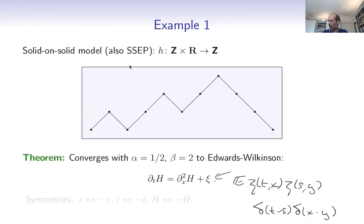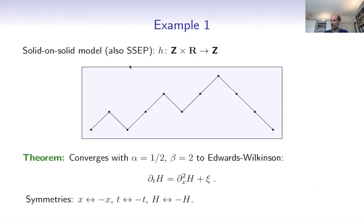One property of that model is that it has many symmetries: it's symmetric under x goes to minus x, symmetric under T goes to minus T, and symmetric under H goes to minus H. All these symmetries are easy to see already at the microscopic model.